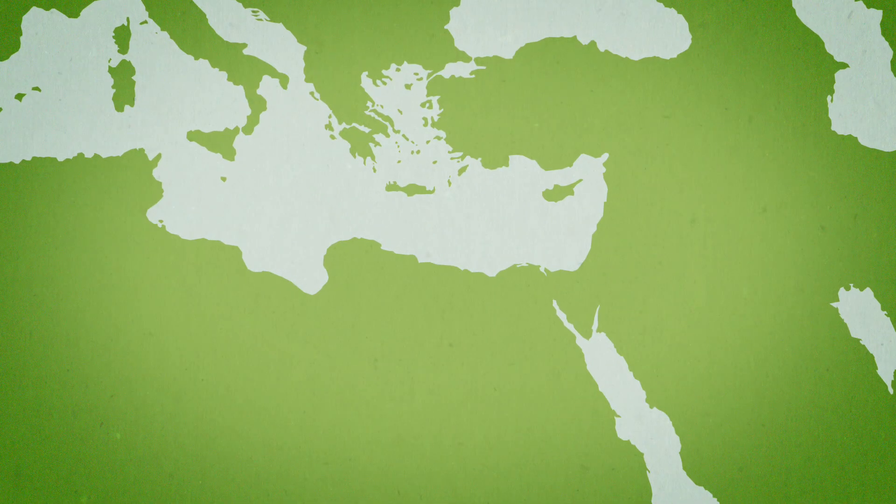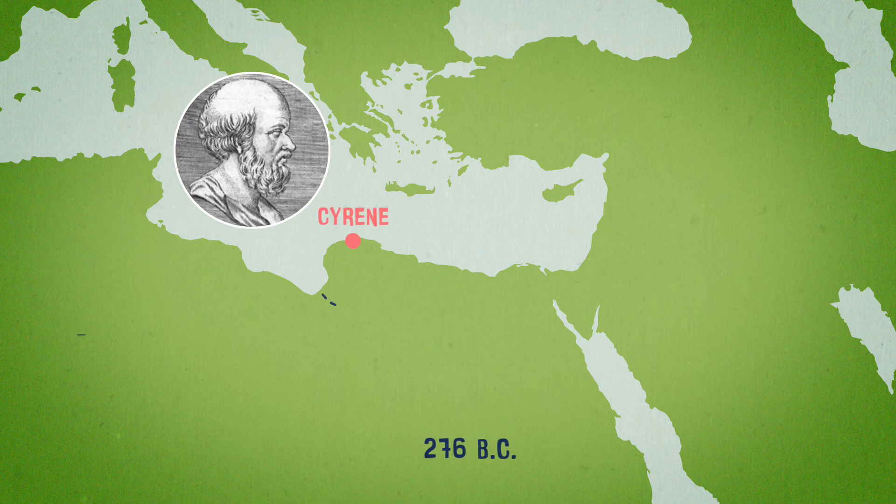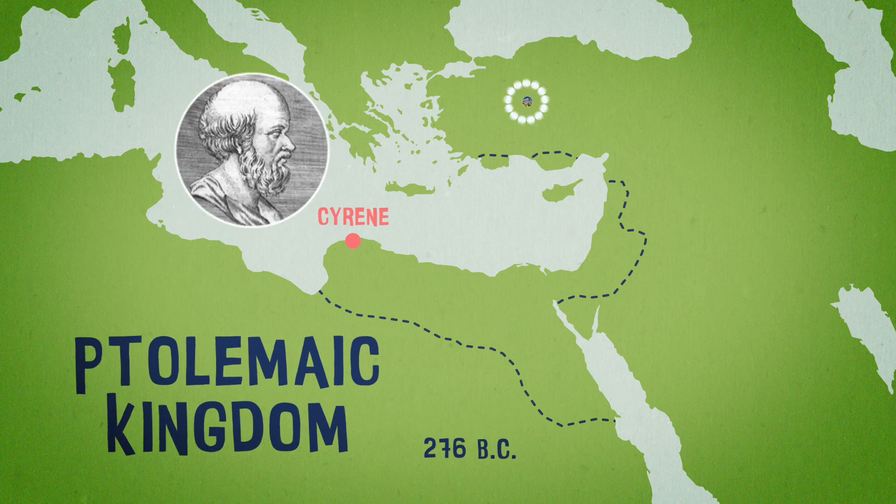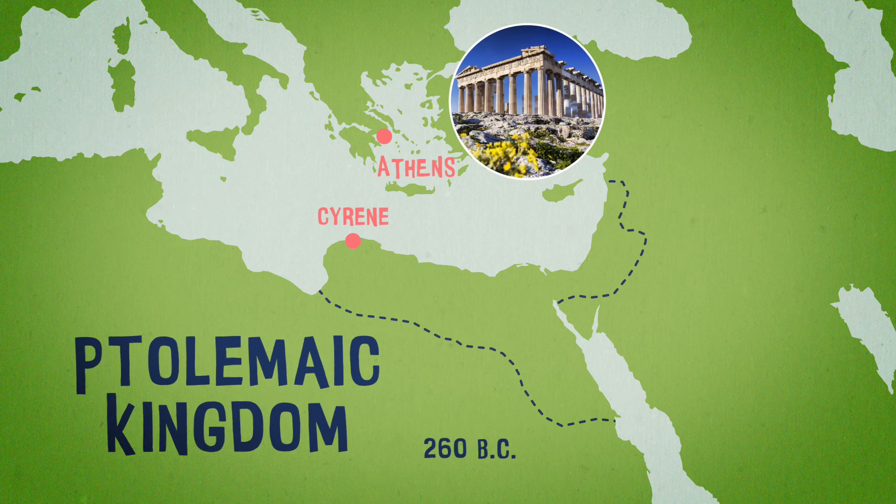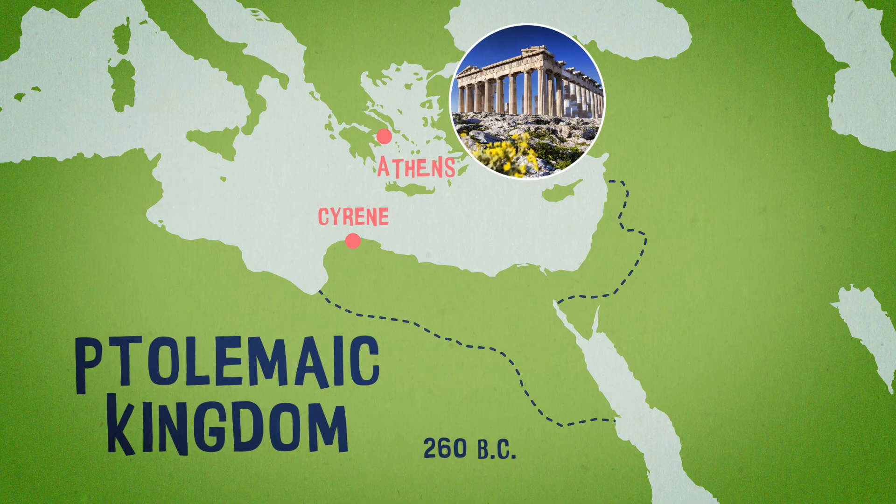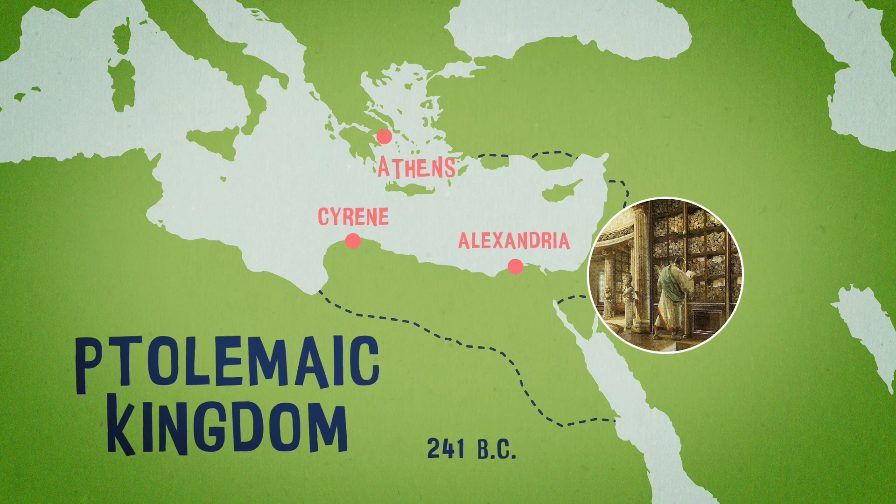Eratosthenes was a Greek scholar born in Cyrene, the oldest city in the Ptolemaic Kingdom. He studied in Athens and was so accomplished that the pharaoh appointed him as the chief librarian at the famed Library of Alexandria.